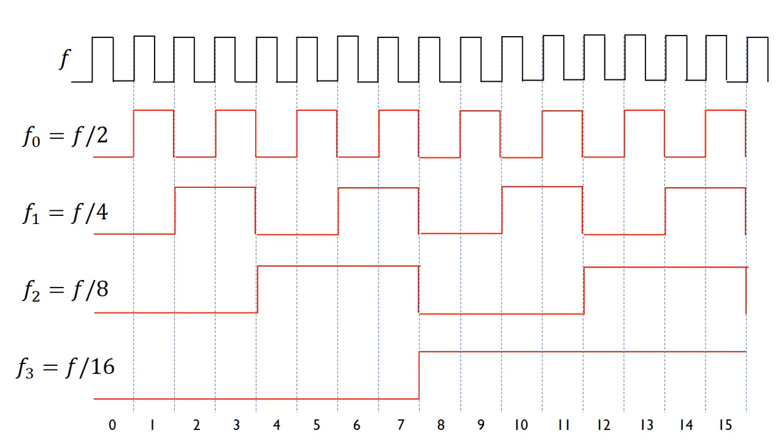Each stage of the counter, the period doubles, hence the frequency divides by 2. So as we go through, we can get f over 2, f over 4, f over 8, f over 16, and so on.